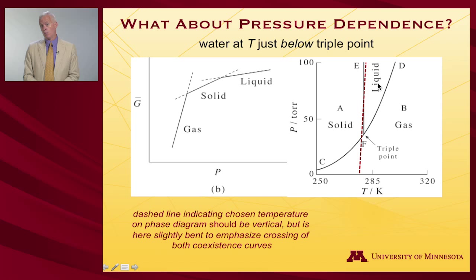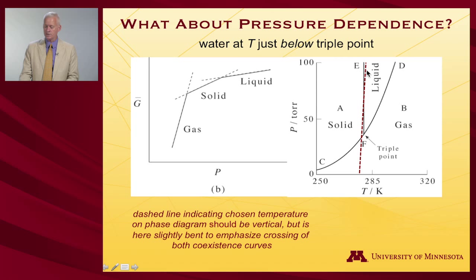We can look at a different substance — water just below the triple point. The water phase diagram looks a lot like benzene's with the exception that the solid-liquid coexistence curve now has a negative slope. The brown line is bent slightly to show how the curves would be crossed, and you see that you would go from a gas to a solid at this temperature, and then to a liquid eventually as pressure increases.